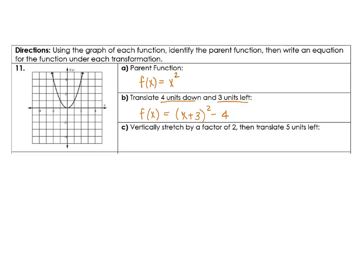Part c wants us to have a vertical stretch, so that means this is going to be on the outside. Vertical happens on the outside, and it's exactly what you think – a stretch of a factor of 2. So we're going to say 2 times – and then this wants us to translate 5 units to the left – so we're going to say x plus 5, all squared.